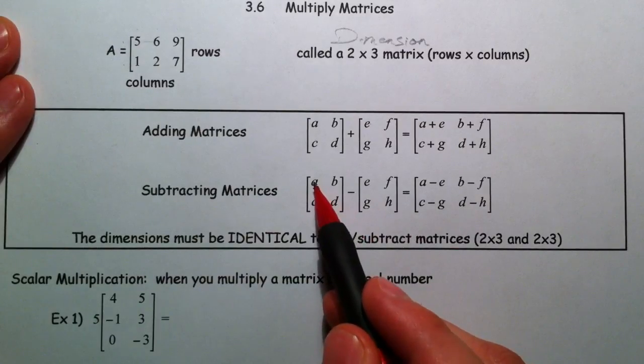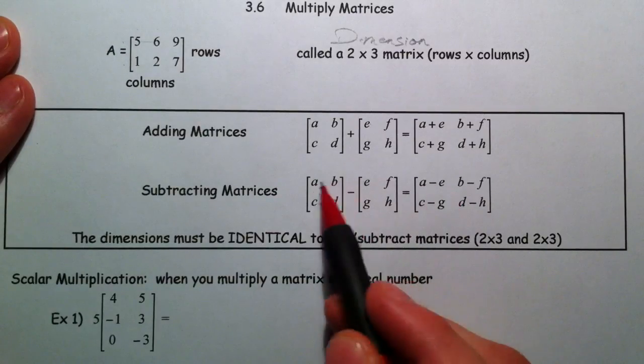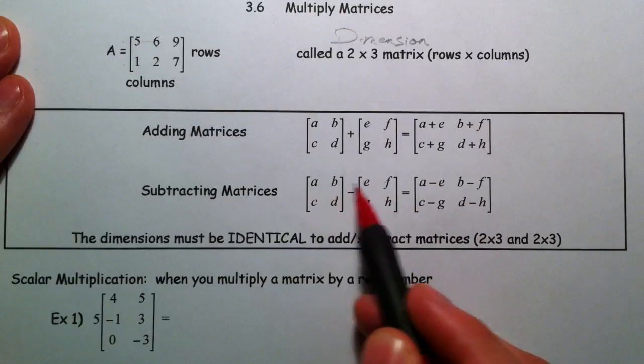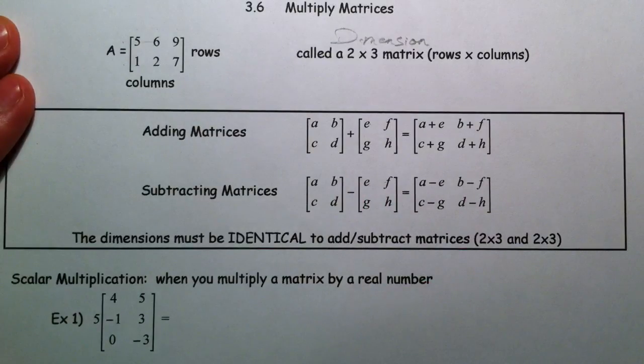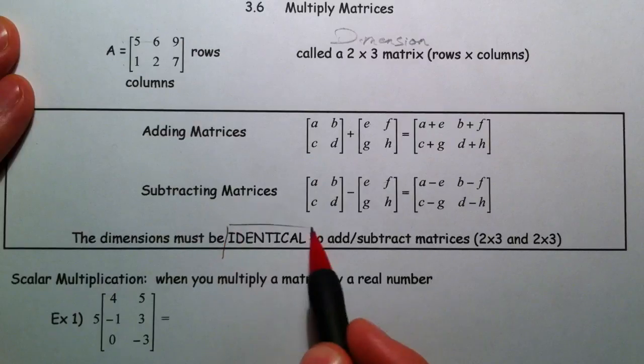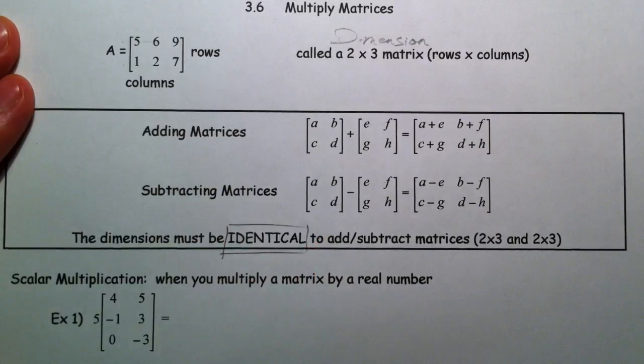And same thing, if you want to subtract, just subtract the corresponding parts. A minus E, B minus F, so on and so forth. Note, they must be identical in order to have corresponding parts to add or subtract.